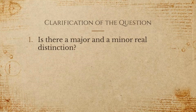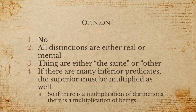Now we have a clarification of the original question. The original question was whether besides the real distinction and the mental distinction, there is some third category. Assuming that real means prior to the action of the mind, and mental means after the action of the mind, then there can't be any third category. But the real question here is whether there's a major and a minor real distinction between two entities, and that's how Suarez clarifies the question. Opinion one is simply no — all distinctions are either real or mental, and you can't come up with a third category.